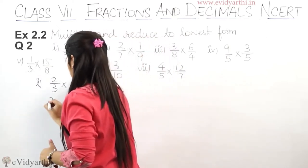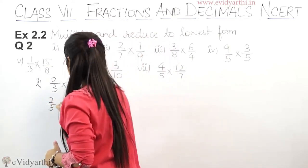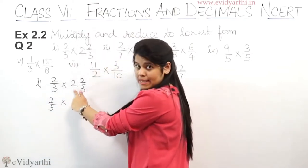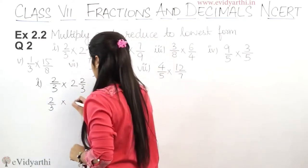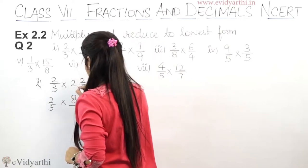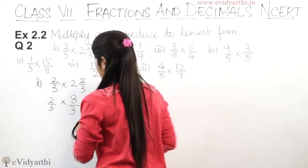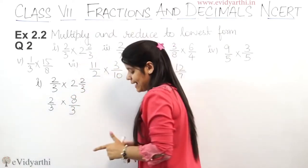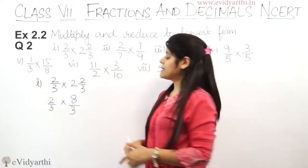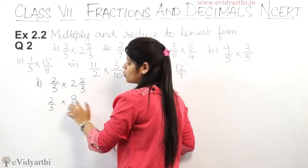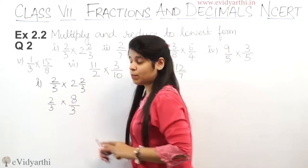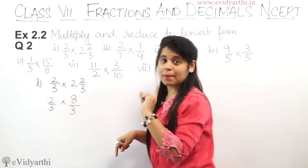So this is 2 upon 3 into 3 into 2 is 6 plus 2 is 8 upon 3. Now again don't do this mistake. It is 3 cut, 2 or 8 cut. Because it is 2 upon 3.